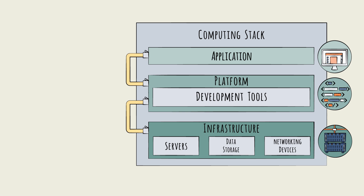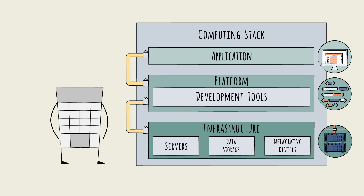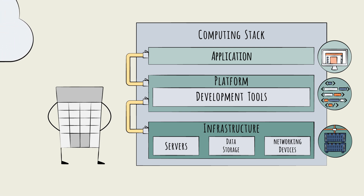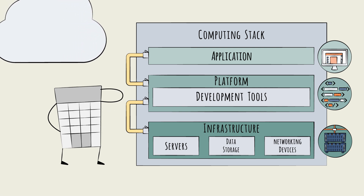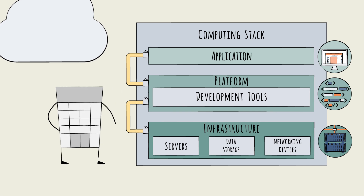To build and run any application, a company will need to secure a mix of resources up and down this stack, and the company will have multiple options for this at each layer. One option is to use cloud-based solutions. In the next chapters, we will take a look at the various cloud solutions and what resources up and down the stack they can provide.